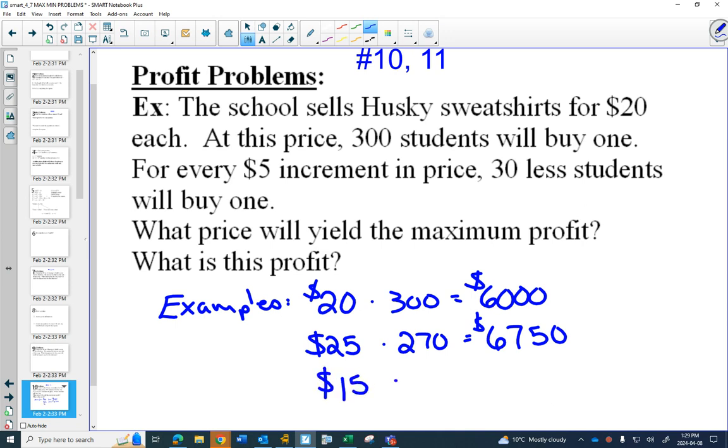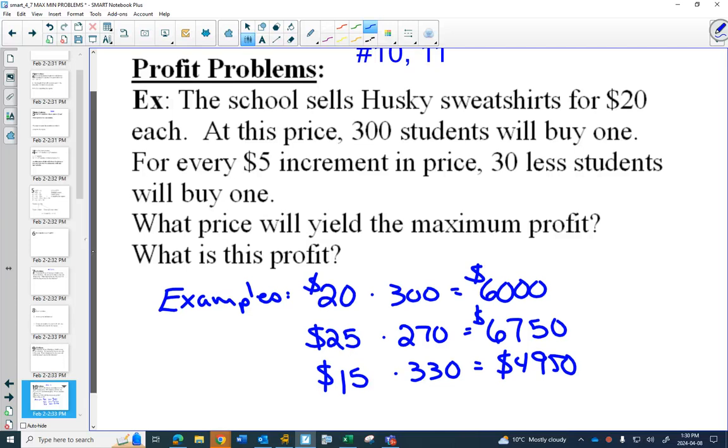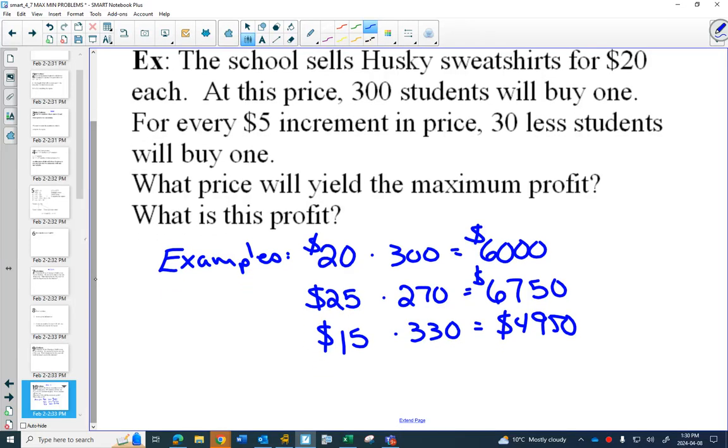We should charge more. What happens if you charge less? $15 times 330. Should they lower the price? No, they're going to make $4,950. So raising the price seems to make the school more money. Should they raise it again? We could check. What would be my next price that I would check? $30. How many people would buy it then? 240. So every time you go up $5, the idea is that you go down 30. We'll check this one. $30 times 240. It's even better.